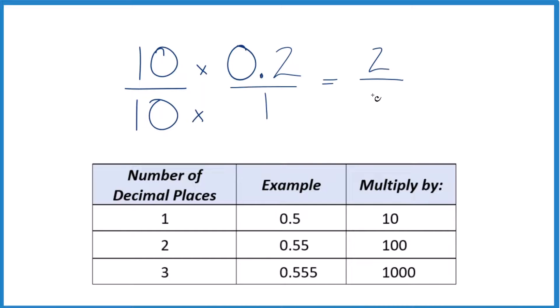10 times 1, that gives us 10. And the decimal is 0.2, or 0.20 equals the fraction 2 tenths.